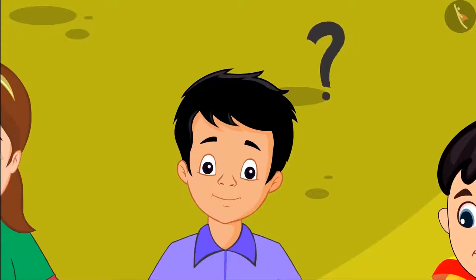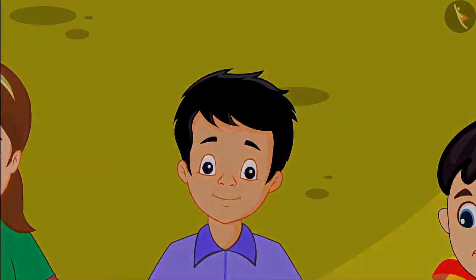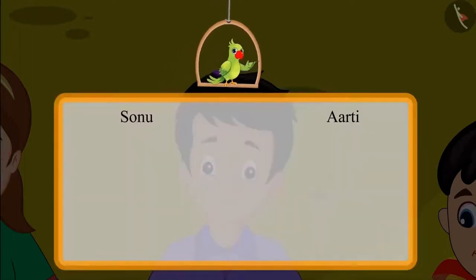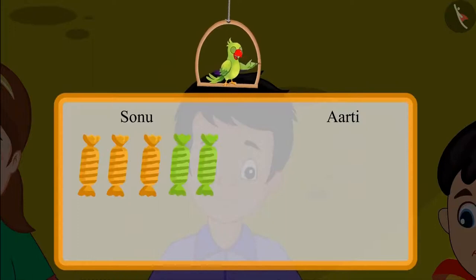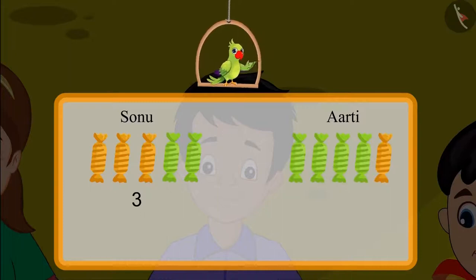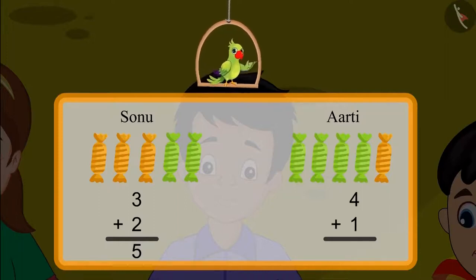Sonu feels he is getting fewer toffees than Aarti. Let's see why Sonu felt this way: Sonu got three yellow toffees and two green toffees, while Aarti got four green toffees and one yellow toffee. Three toffees and two toffees added together makes five. Four toffees and one toffee added together also makes five.